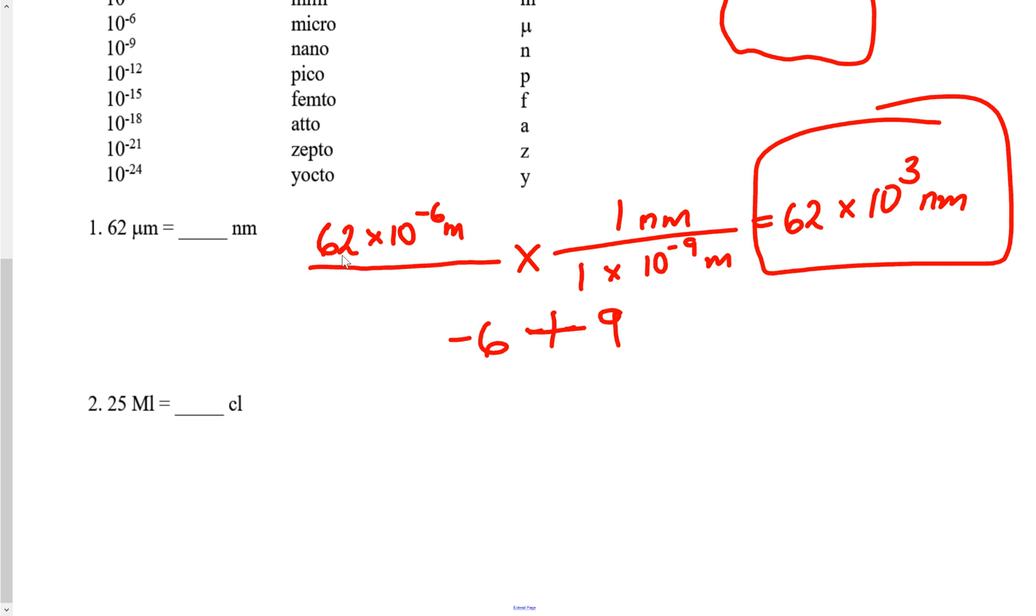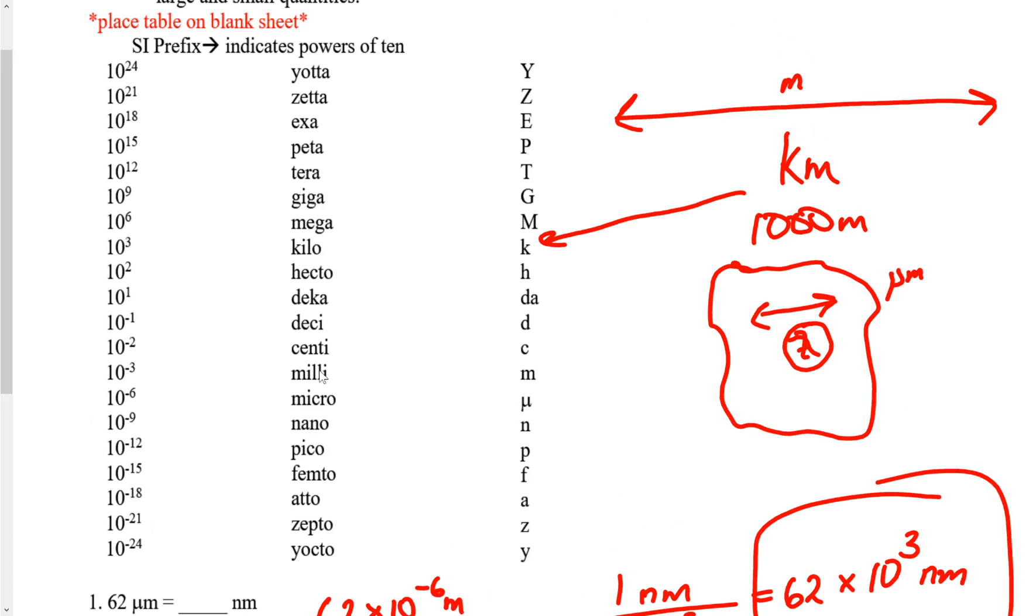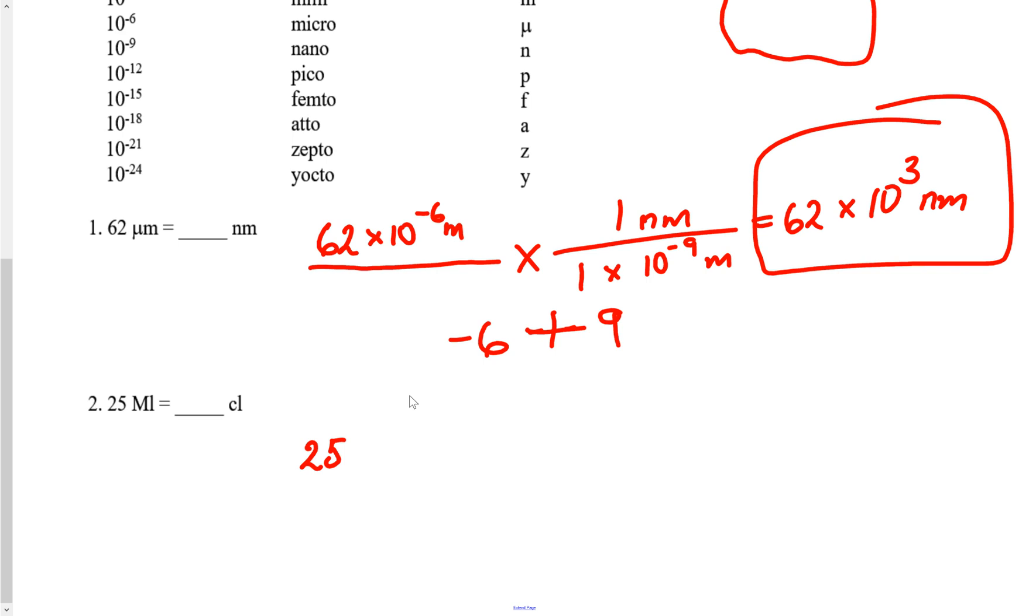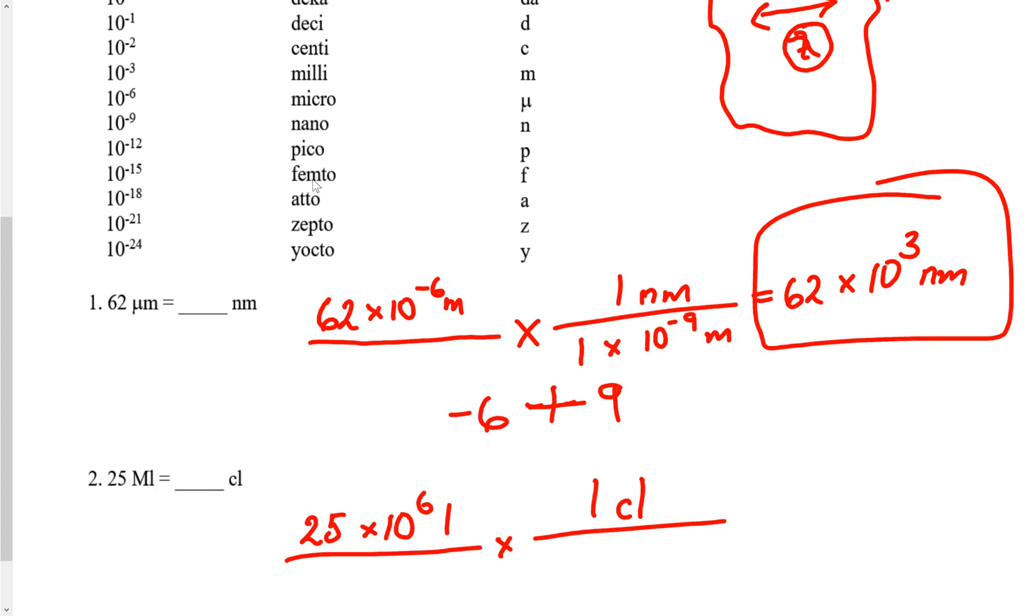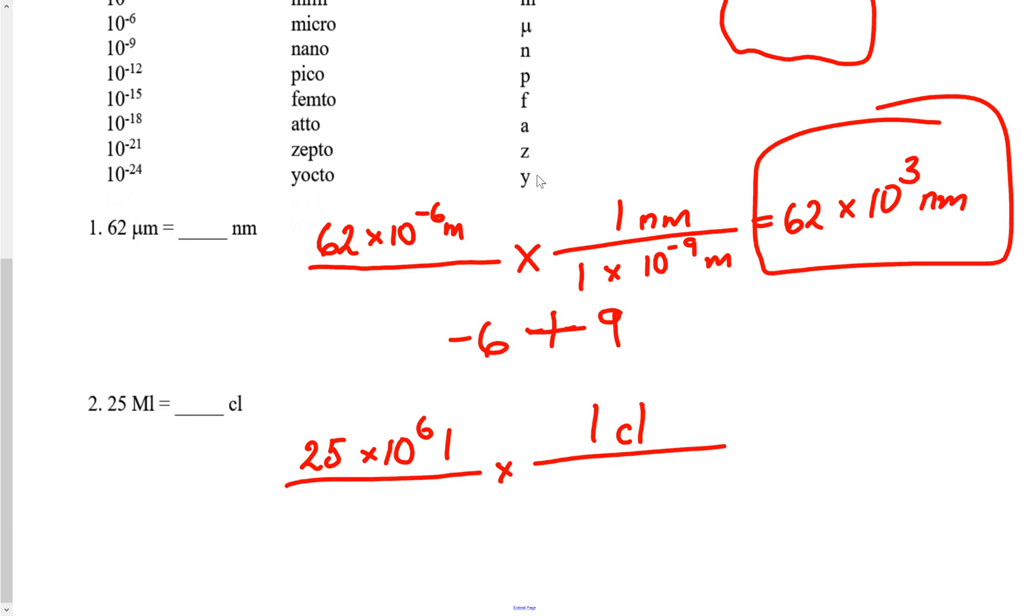Let's do another one: 2.25 megaliters. Liter is the basic unit for volume in SI. Mega means 10 to the 6, so 2.25 times 10 to the 6 liters. I want to change this to centiliters. Centi means 10 to the negative 2. All you have to do is divide: 10 to the 6 minus 10 to the negative 2, so 6 minus negative 2 means plus 2. This answer is 2.25 times 10 to the 8 centiliters.